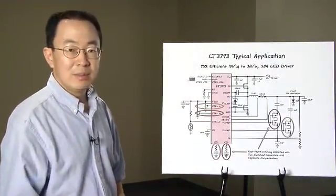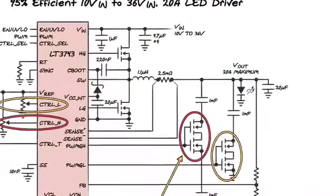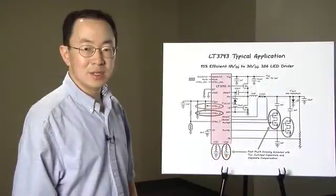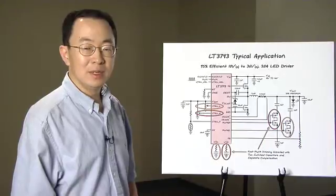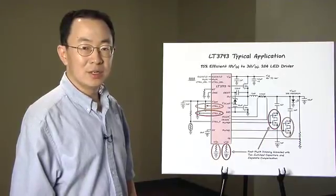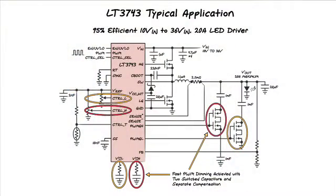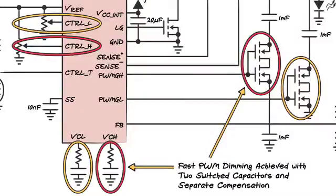Here is a typical application circuit of the 3743 driving one LED at 20 amps. The topology is a synchronous step-down DC-DC controller with a current feedback loop. An LED driver is a current source. The LED current, not its voltage, is regulated.